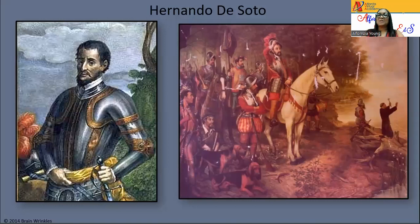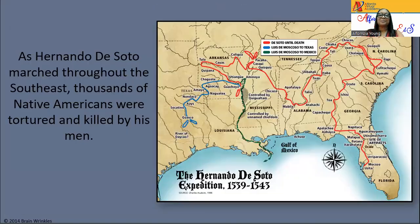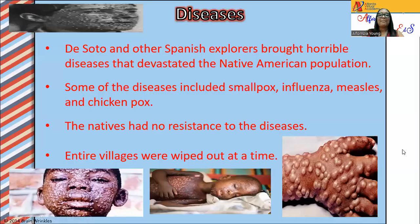This is a picture of Hernando de Soto. As Hernando de Soto marched throughout the Southeast, the Native Americans were tortured and killed by his men. I do have a blank map where you can trace out his route, because there might be some questions about it. De Soto and other Spanish explorers brought horrible diseases that devastated the Native American population. Some of the diseases include smallpox, influenza, measles, and chickenpox. The Natives had no resistance to these diseases, and entire villages were wiped out at a time.